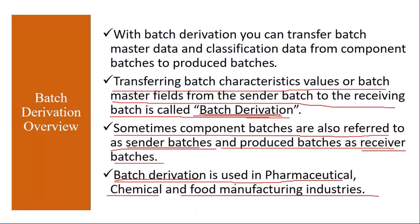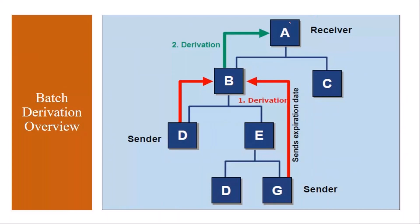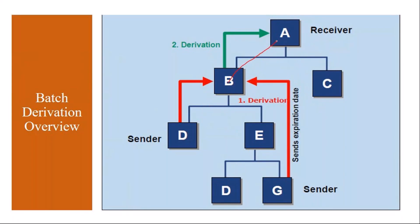Normally if you go to any medical shop or pharmacy and you purchase tablets or medicines, you see that there is a batch number, manufacturing date, and expiry date. Those kinds of industries use batch derivation. You produce a product, to produce the product you need components, and you transfer the data from the components to the header material batch. Instead of entering it manually, you make the settings in the system so that this batch data transfer happens automatically to the receiver material.